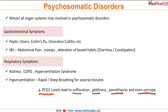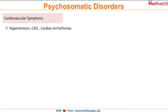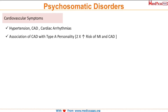In the cardiovascular system, hypertension, coronary artery disease, and cardiac arrhythmias all have significant psychosomatic components. The association of CAD with Type A personality is clearly established — there is twice the risk of myocardial infarction in patients with Type A personality.